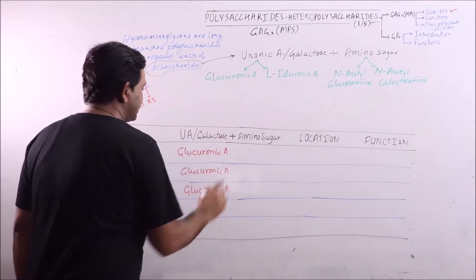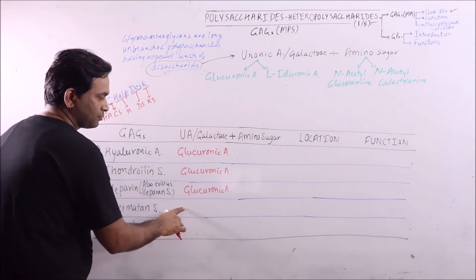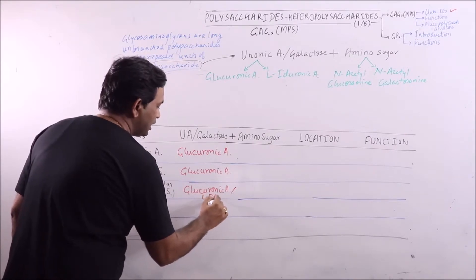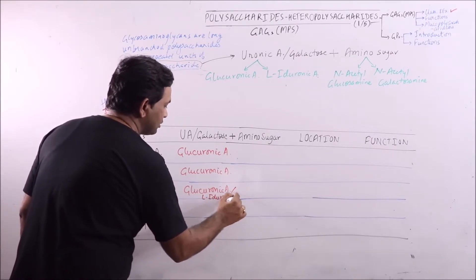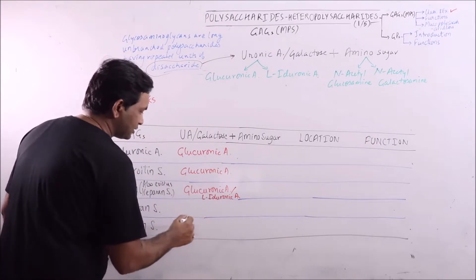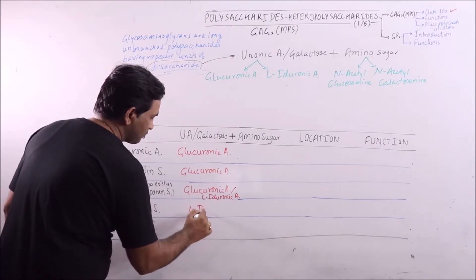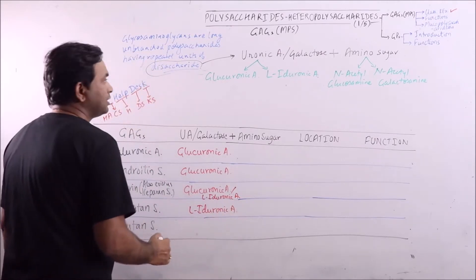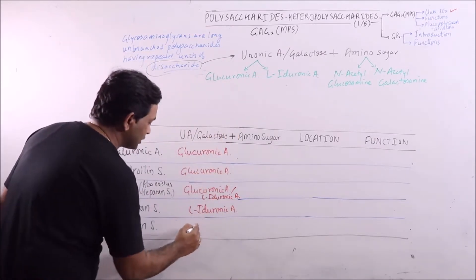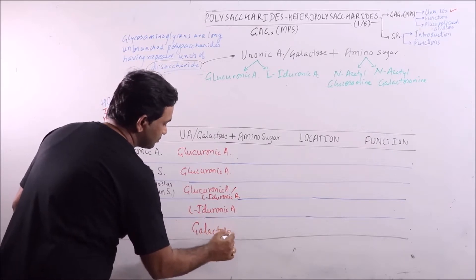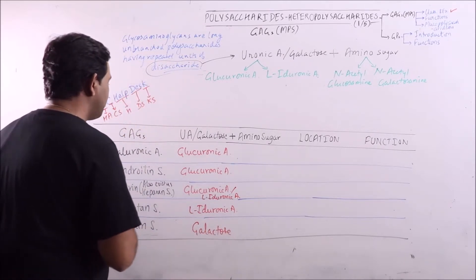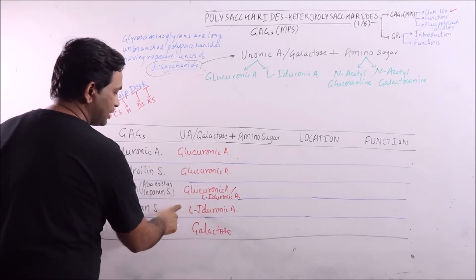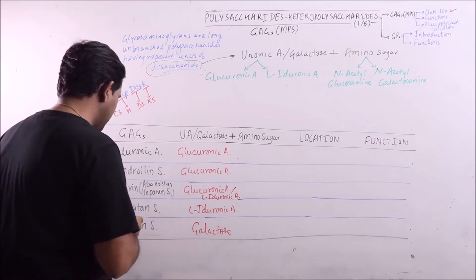L-iduronic acid is in third and fourth. That is, L-iduronic acid or glucoronic acid will be there. And in the last one galactose is there. So in first three glucoronic acid, iduronic acid in third and fourth, and galactose in last one.